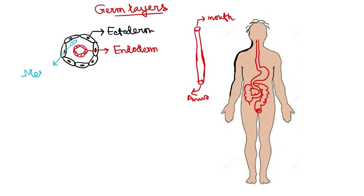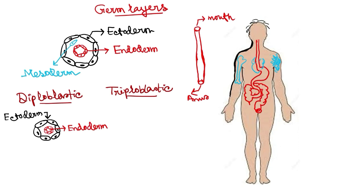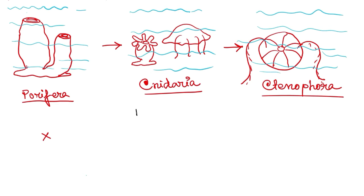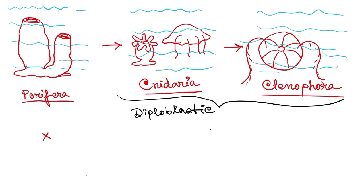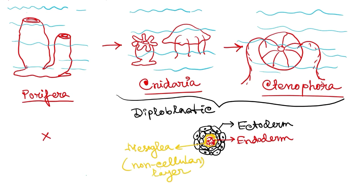Another group of cells between ectoderm and endoderm is called mesoderm. Mesoderm is not present in all phylums of the animal kingdom. There are two types of animals: diploblastic and triploblastic. Diploblastic animals do not have the mesodermal cellular layer — they have ectoderm and endoderm but no mesoderm. In place of mesoderm they have a non-cellular layer. No specific germ layer is found in Porifera. The diploblastic germ layer is found in Cnidaria and Ctenophora, with ectoderm, endoderm, and a non-cellular layer in between called mesoglea.